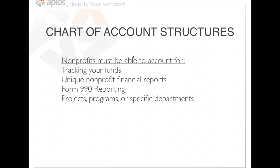Now let's look at chart of account structures. As a nonprofit, you need to be able to account for and track your funds. You need unique nonprofit financial reports — meaning you need to run financial reports by fund. You also might need Form 990 reporting depending on the size of your organization. And you might want to account for projects, programs, departments, ministries, trips — any kind of side effort that is part of the overall mission of the organization.